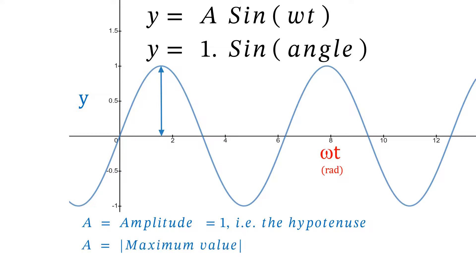A doesn't have to be 1. Mains electricity's A is 325 volts.